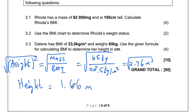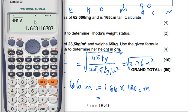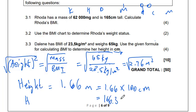That's in meters, but we want this in centimeters. So if we want to convert from meters to centimeters, we have to multiply by 100. We multiply the answer we got by 100, and then we get 166.31 centimeters.